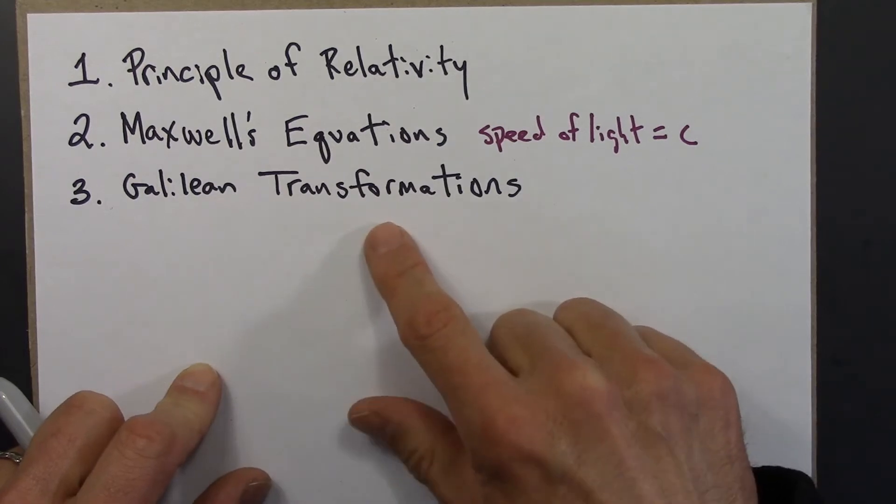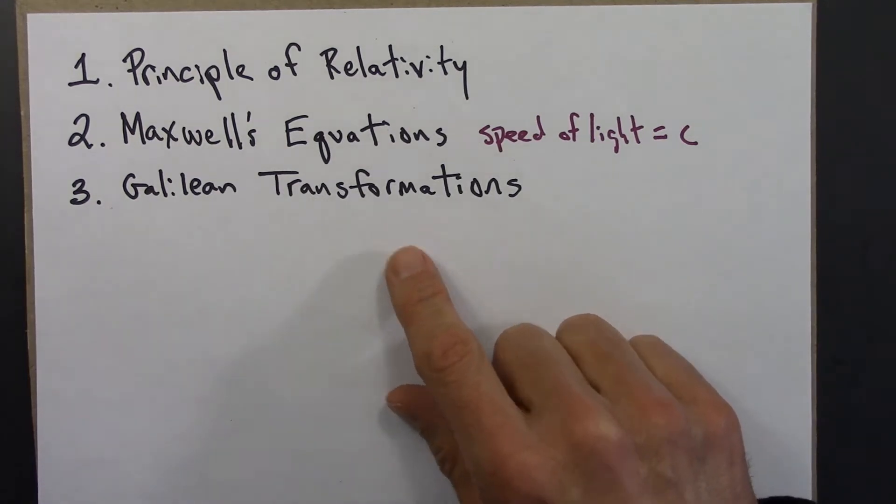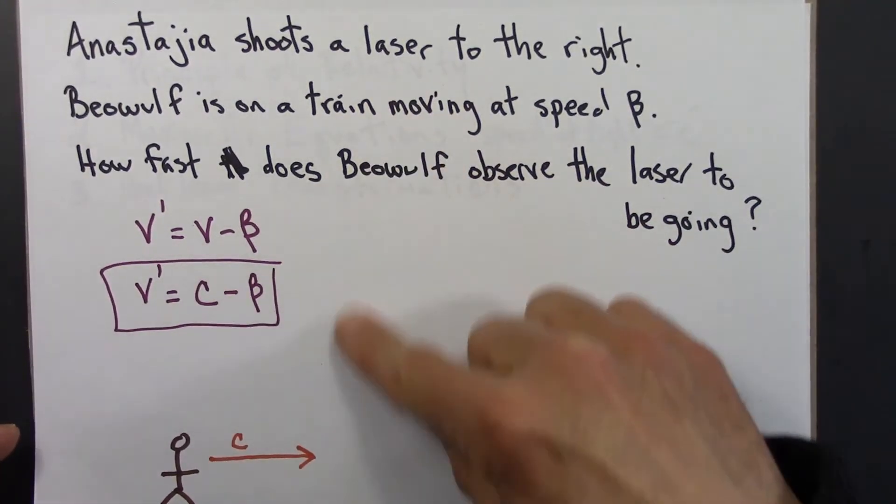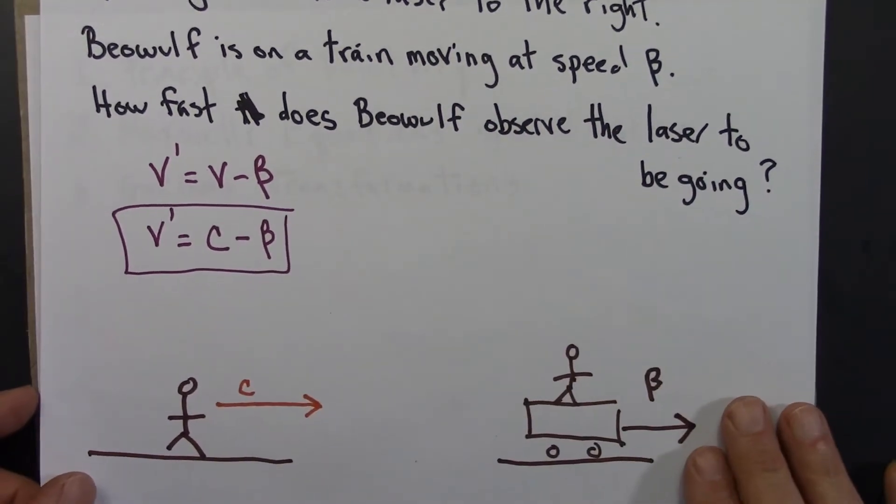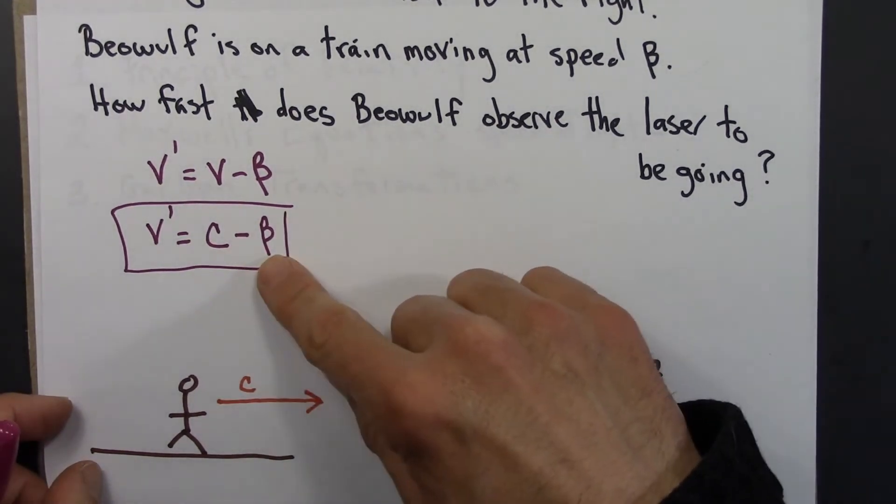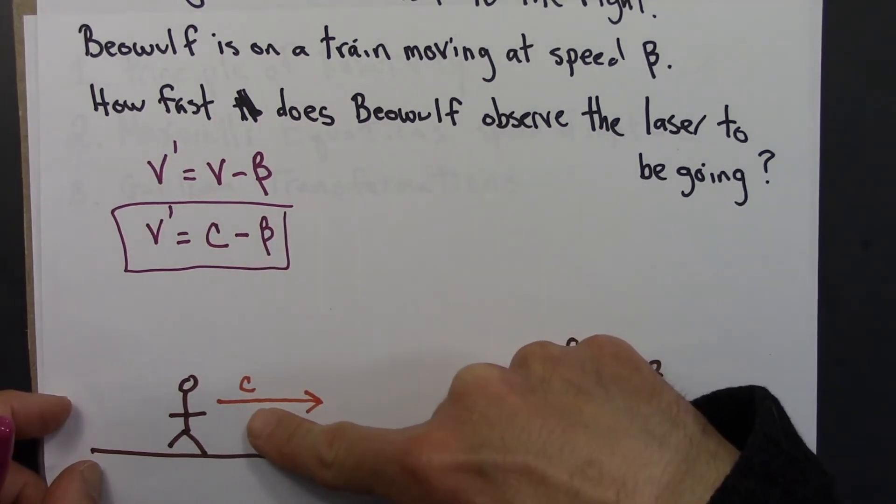And then we have the Galilean transformations, that tells us how to relate quantities in one reference frame to quantities in another reference frame. And if we do that for a light beam, a laser beam, like we did in the previous video, we would get that Beowulf, moving on a train, records a different value for light speed than Anastasia does on the ground and at rest with respect to the ether.